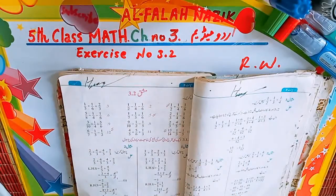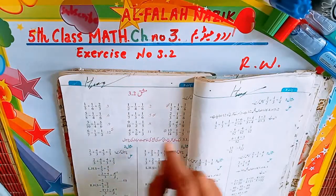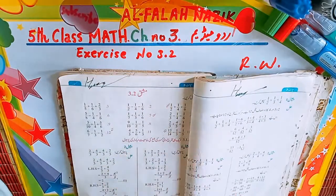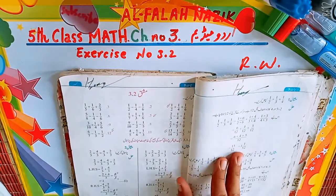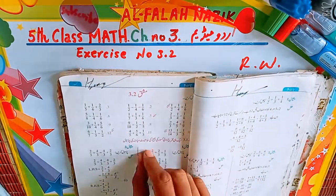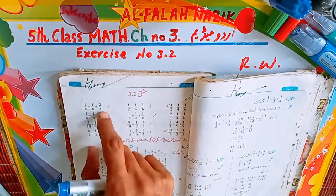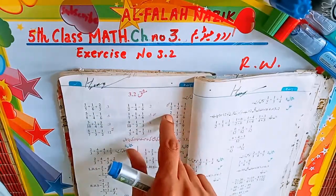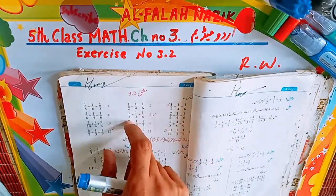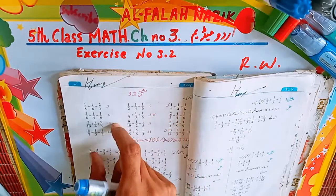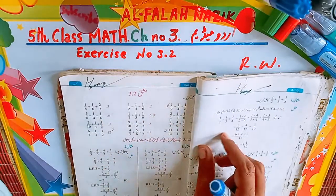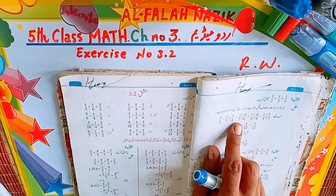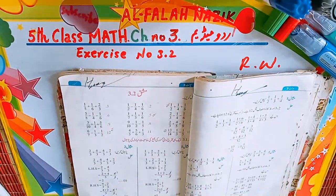تین تین کسروں کو ہم نے اکٹھا حل کرنا ہے۔ بالکل سیم طریقہ کار رہے گا — اس میں بھی LCM لینا پڑے گا اور حل کرنا پڑے گا۔ بس فارق صرف یہ ہے کہ پہلے دو fractions تھی، اب تین fractions ہیں۔ تو چلیے question number 1 کی طرف چلتے ہیں اور وہاں سے start کرتے ہیں۔